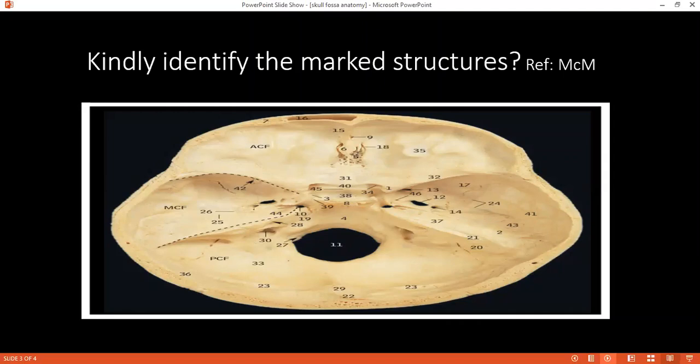Can you please tell me what are the contents of the posterior cranial fossa? Yes. Both the lobes of the cerebellum and the part of the brain stem. Below the tentorium cerebelli is in the posterior cranial fossa.